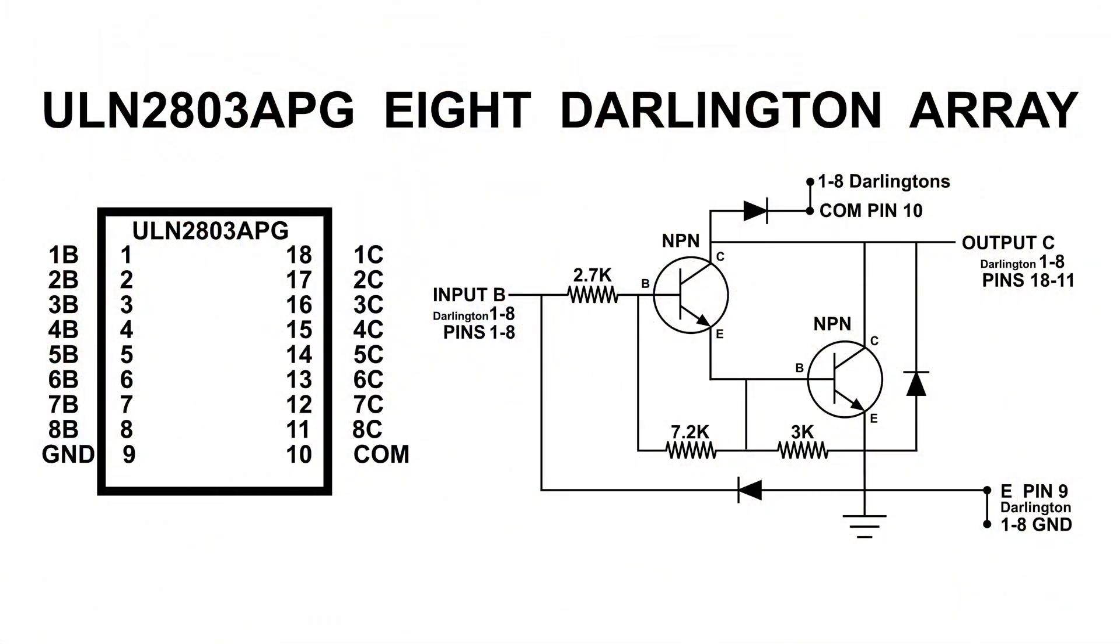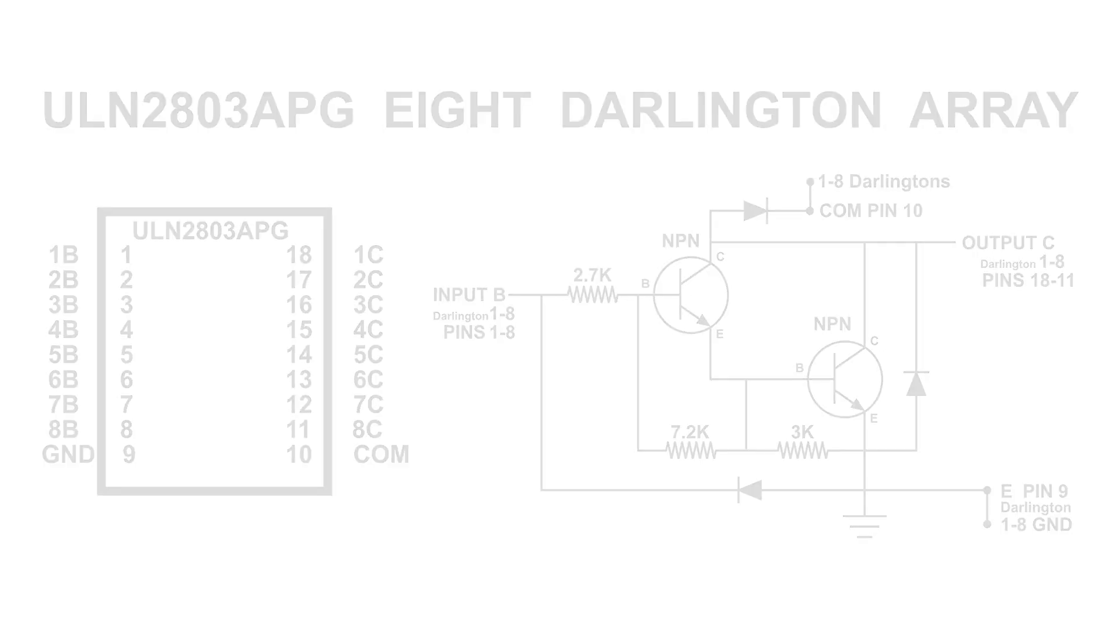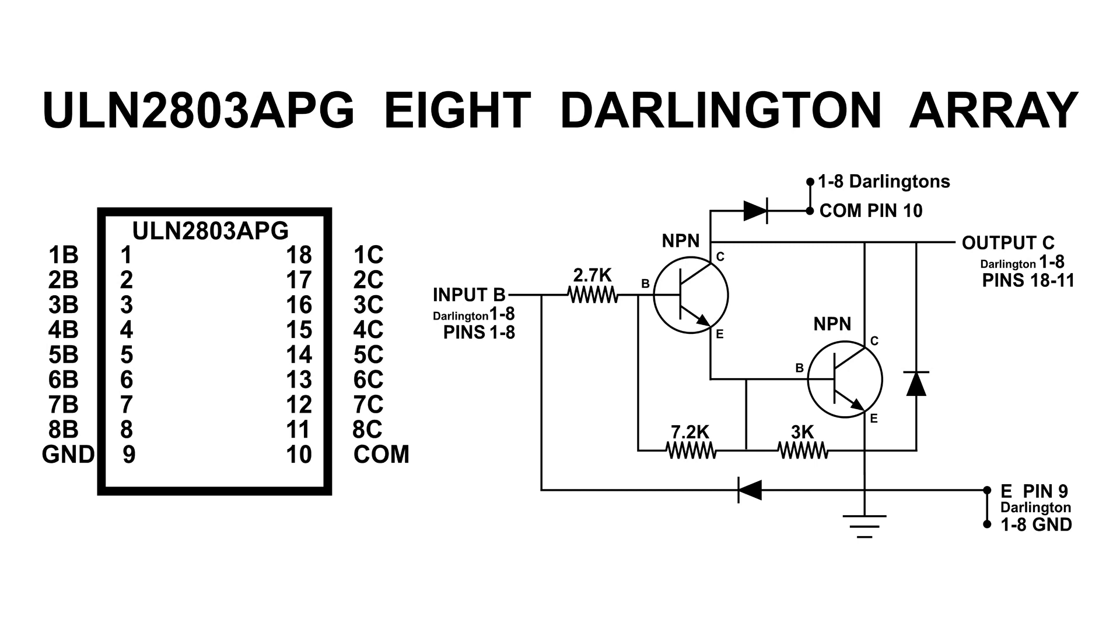Here's a drawing of the ULN2803APG, eight Darlington array. And before I get into this, this is the YouTuber that suggested that I use this chip, and that was very helpful. Thanks very much. Now, if we take a look at the left side, you can see how the pins are laid out. 1B stands for the first base, and 2B is the base of the next Darlington. And if we look on the right of the chip, we've got 1C and 2C. Those are the collectors of each Darlington, and you can see they're all in order. It's very nice. Then we have a ground on pin 9, and on pin 10 is common.